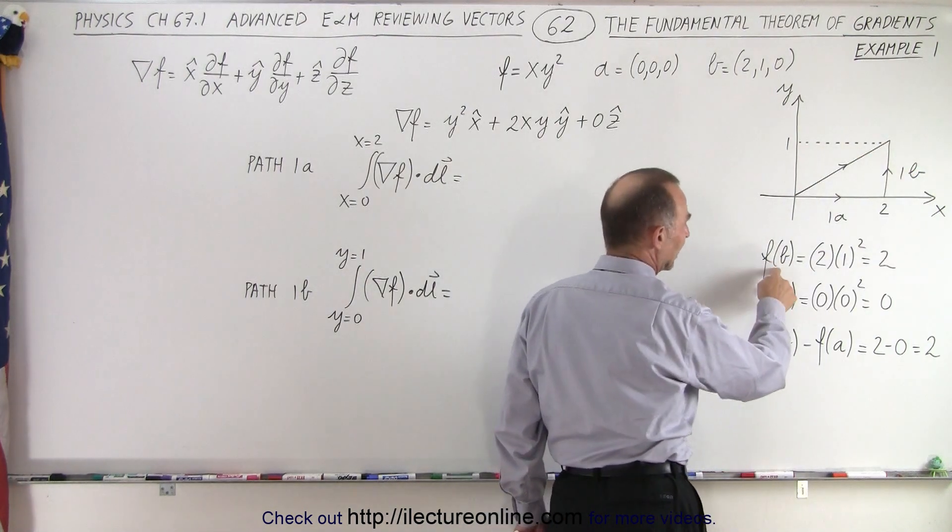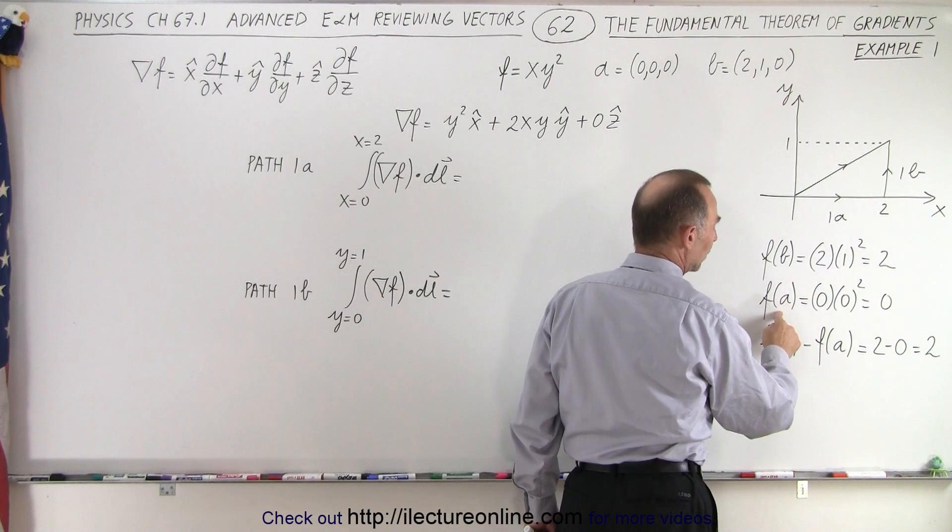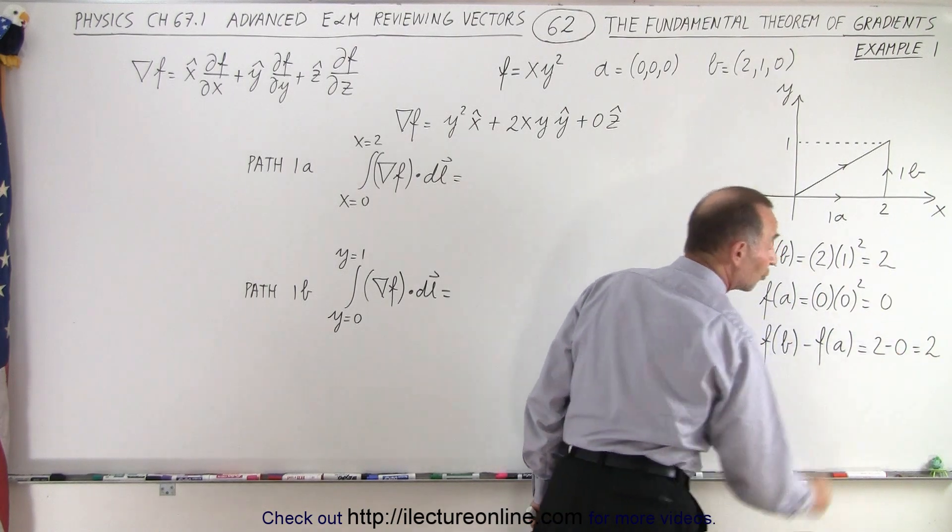You can see that if we evaluate the end point B, we get 2, and we evaluate the initial point A, we get 0, subtract it 2, we get 2.